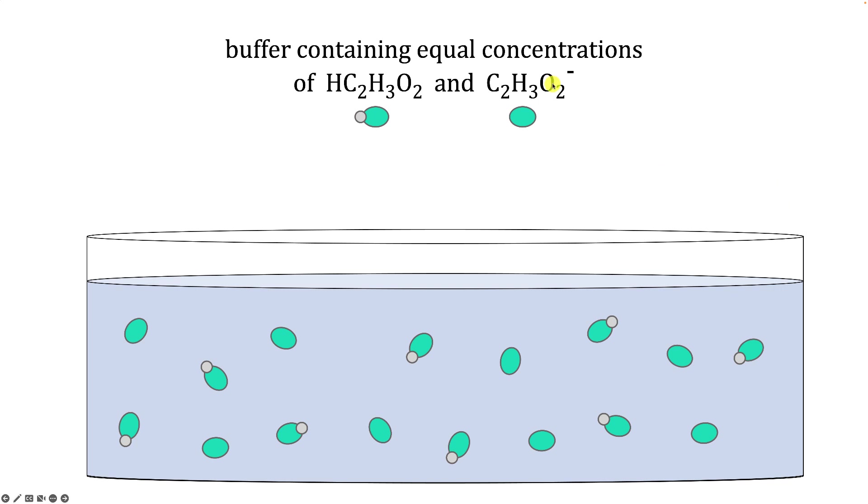Here we have a buffer solution containing equal concentrations of acetic acid and acetate ion. In the beaker we have a particulate level representation of 8 acetic acid molecules and 8 acetate ions. This buffer solution has a pH of 4.75 at 25 degrees Celsius.